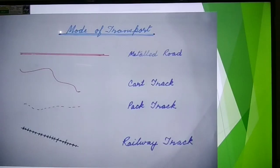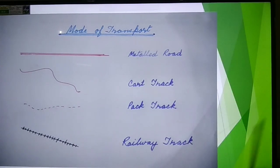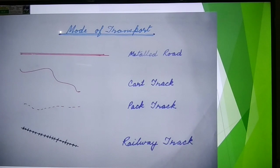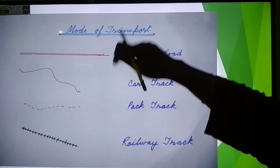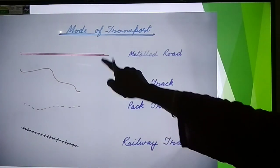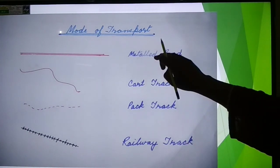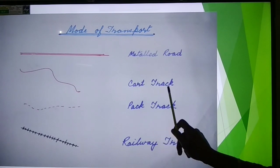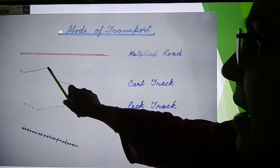Here are the four modes of transport and the symbols we use for them. First is metal road — metal road is shown on the topo sheet with two parallel lines. Metal road is also called pakka road. Next one is car track — car track is shown on the topo sheet with a single red line.